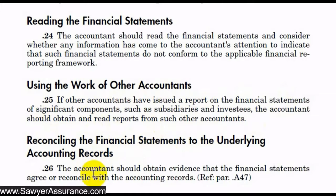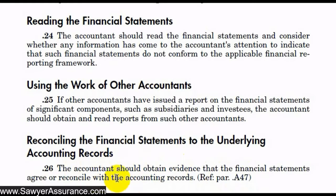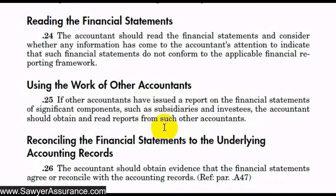We should also obtain evidence that the financial statements agree or reconcile with the accounting records. We might first tie out the financial statements to the trial balance and the grouping schedule to make sure everything reconciles with the financial statements. We might also get financial statements from other accountants for subsidiaries and investees to see how they roll up, consolidate, and reconcile into the overall financial statements.